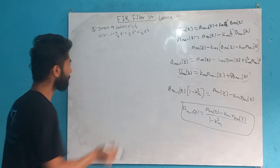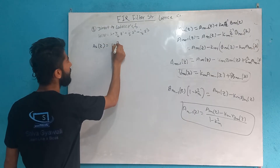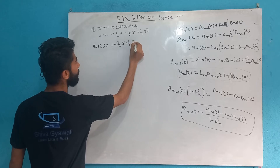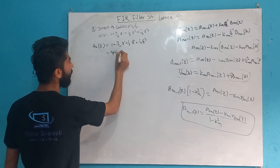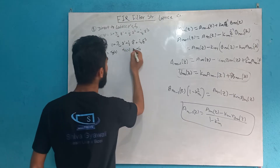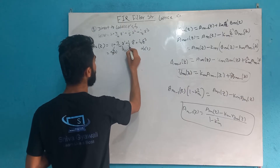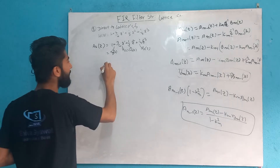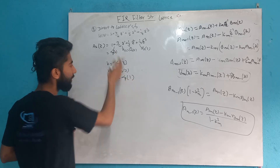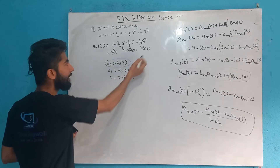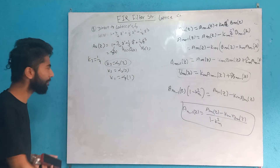Let's do this example. A_3(z) equals 1 plus (3/4)z^{-1} plus (1/2)z^{-2} plus (1/4)z^{-3}. The alpha coefficients are: alpha_3(0)=1, alpha_3(1)=3/4, alpha_3(2)=1/2, alpha_3(3)=1/4. So k_3 equals 1/4.